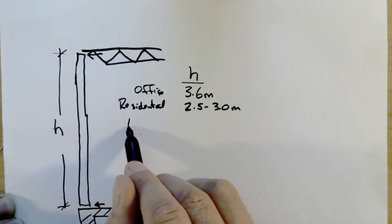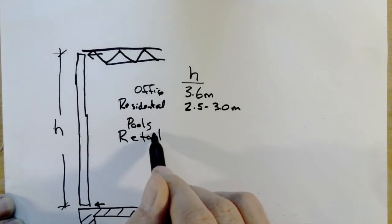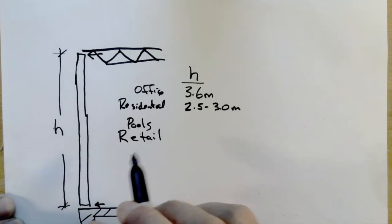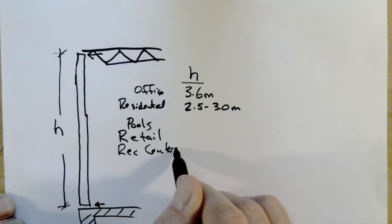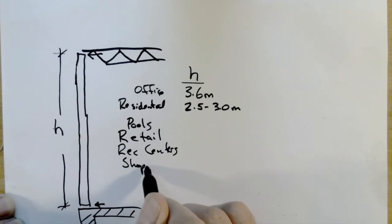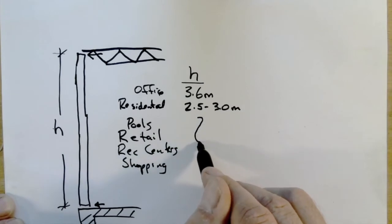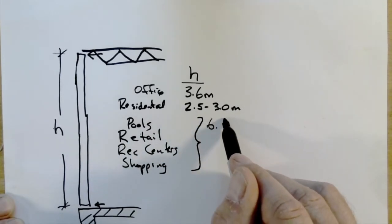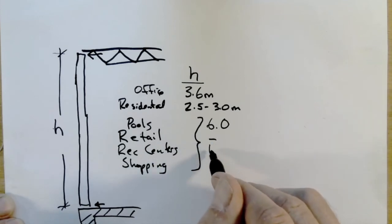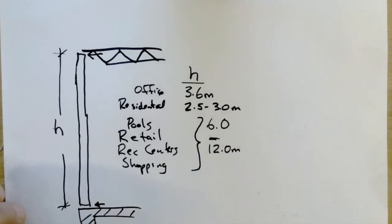The height H of this structural support system varies by building type. For an office building it might be 3.6 meters. For common residential it might be 2.5 to 3.0 meters, though expensive buildings have higher floors — in a $20 million condo you'd expect something closer to 6 meters. For buildings like pools, big box retail, rec centers, convention centers, and shopping malls, we often see floor-to-ceiling heights of 6 to even 12 meters, with a definite trend moving in that direction.